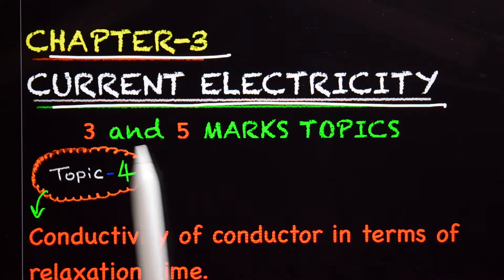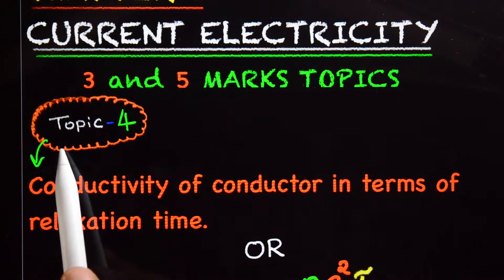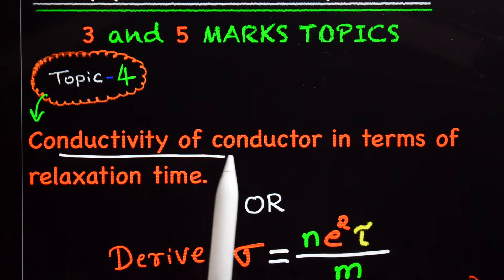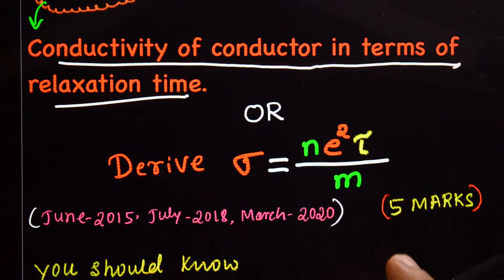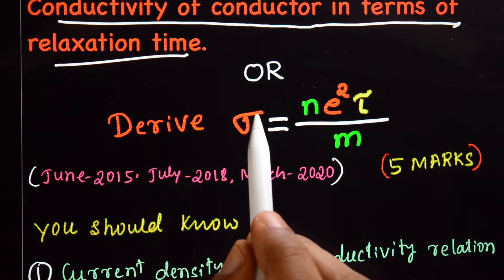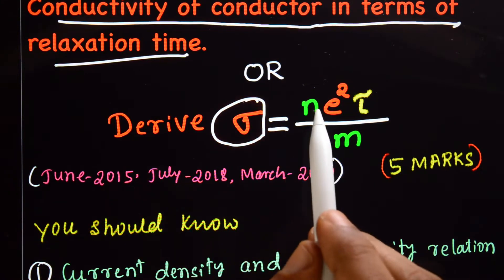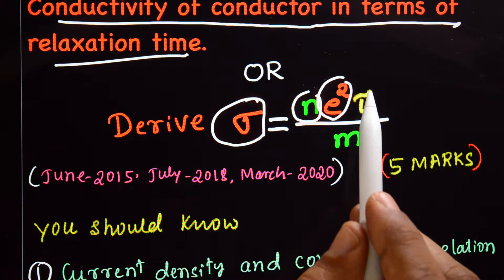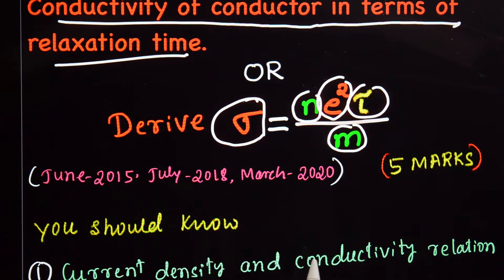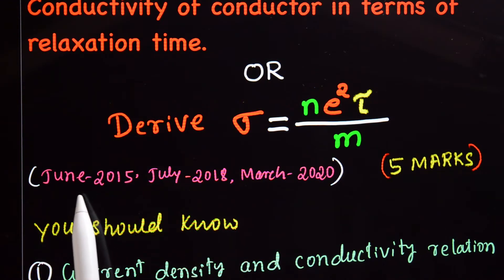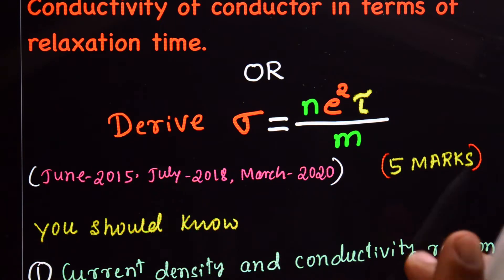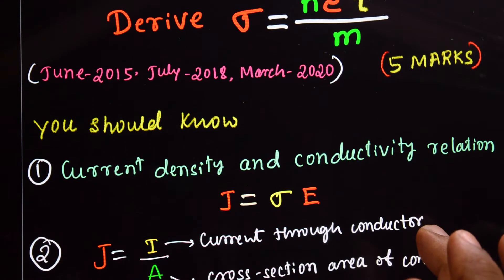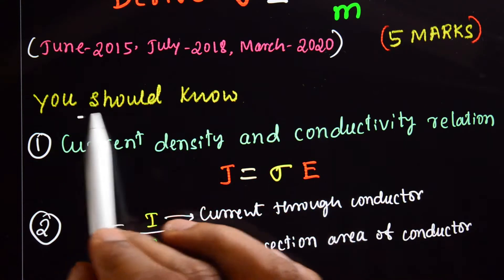Chapter 3: Current Electricity. This is topic number 4 — conductivity of a conductor in terms of relaxation time. You may be asked to derive sigma, the conductivity, which equals n·e²·τ divided by m. This is a five-mark topic that appeared in June 2015, July 2018, and March 2020 exams.